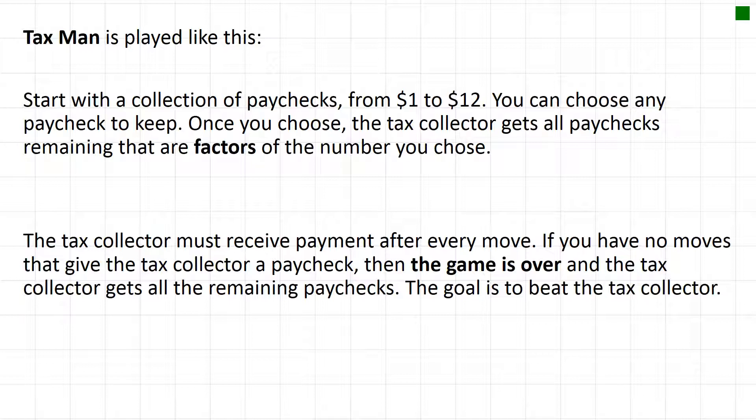Once you choose this paycheck, the tax collector gets all paychecks remaining that are factors of the number you chose. The tax collector must receive payment after every move. So if you have no more moves that give the tax collector a paycheck, the game is over.